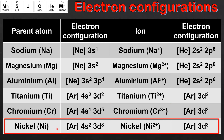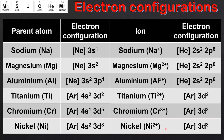Finally we have Nickel which has the electron configuration AR4s2 3d8. Like all transition elements, when Nickel forms a 2+ ion it loses the two electrons in the 4s sublevel first. So the electron configuration of the Nickel 2+ ion is AR3d8. The important point here is that when they form ions, transition elements lose their 4s electrons first, then followed by the electrons in the 3d sublevel.